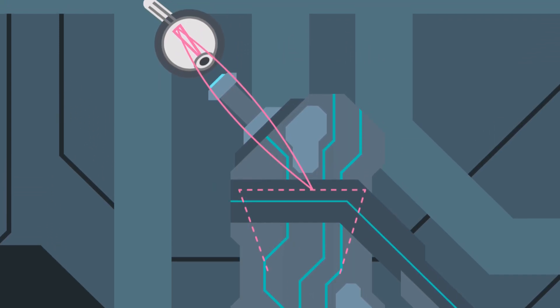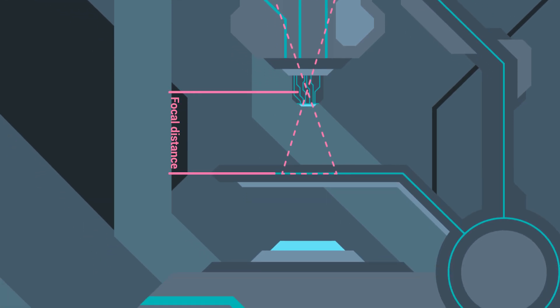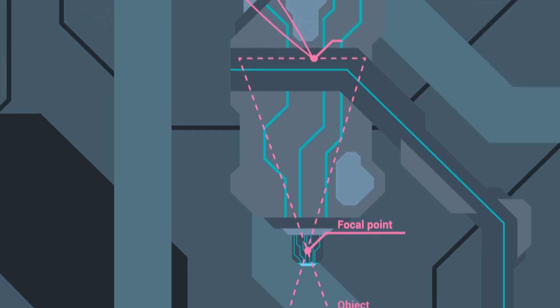A regular convex lens focuses light from an object at a point on the other side of the lens, called the focal point, and at a distance called the focal distance.